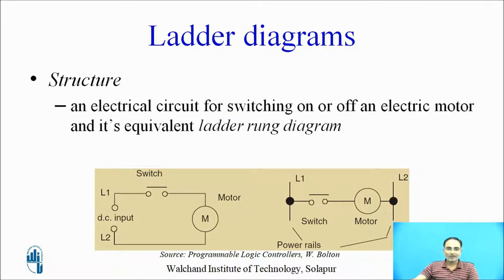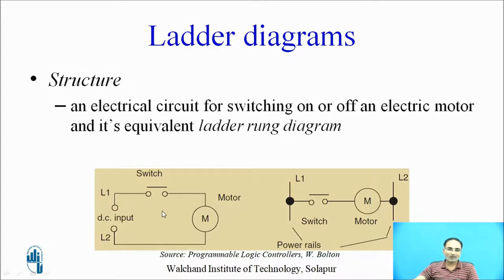Now let us take an example of how an electrical circuit is converted into a ladder diagram. Here we have a DC input in series with a switch and motor. When the switch is pressed the motor should start, and when the switch is released the motor should stop. In a ladder diagram, this DC input is represented by the two power rails, and the switch and motor are connected in series between these two power rails, so they become one rung.